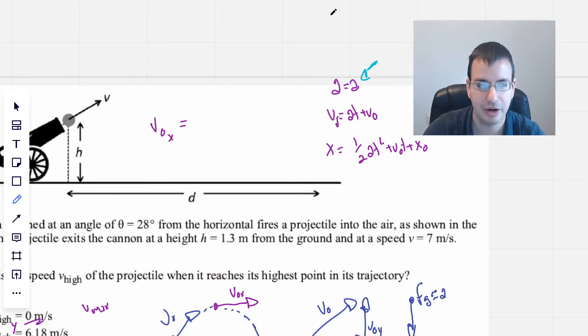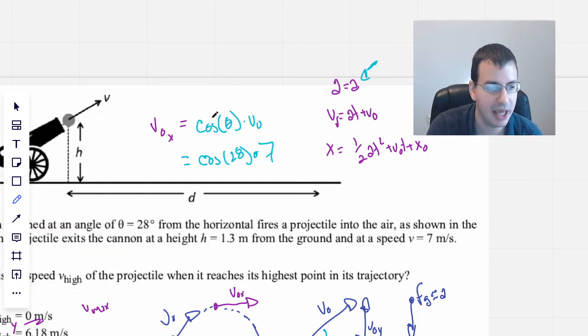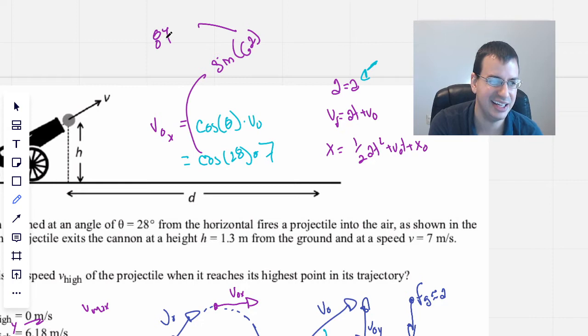Now that we have the background story complete, we can just find the horizontal portion of this triangle, which will be cosine of theta times initial velocity, which is cosine of 28 times 7. So doing some quick math in my head, cosine of 28 will be the same as sine of 90 minus theta, which is 62.